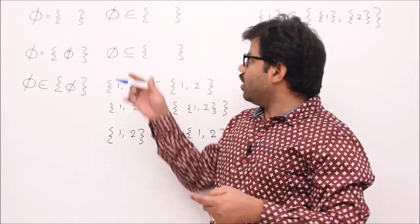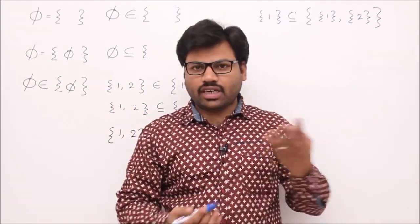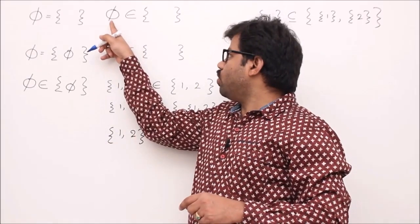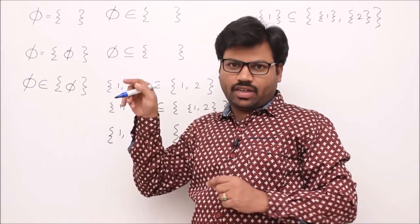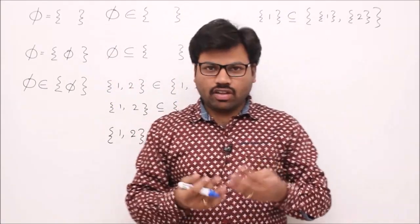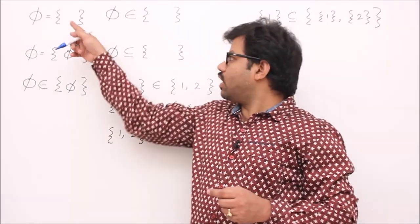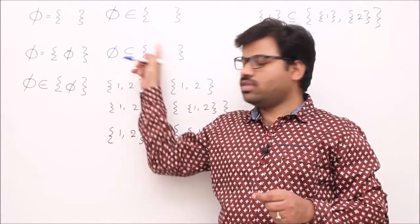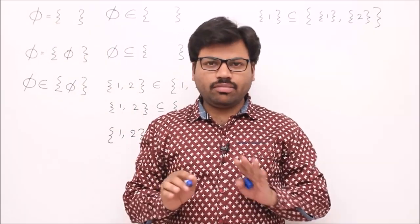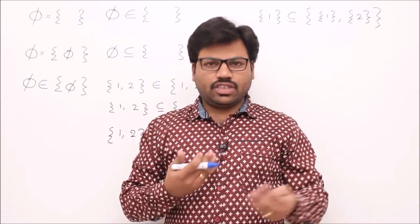I want to know whether you understand the 'belongs to' operator and the 'subset or equal to' operator. Sometimes you get confusion between 'belongs to' and 'subset or equal to', and sometimes you don't understand empty set properly. That's why I gave you some examples. Try to solve them on your own before continuing this video. These are all true/false questions, so first solve them, then continue.